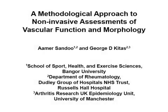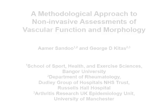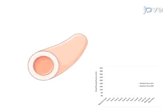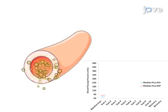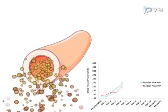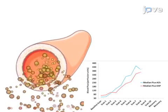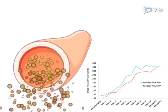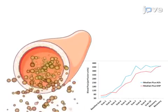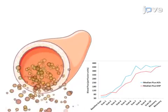The overall goal of the following experiment is to examine subclinical atherosclerosis in different vascular territories. First, laser Doppler imaging with iontophoresis of vasodilating drugs is used to examine microvascular endothelial function.